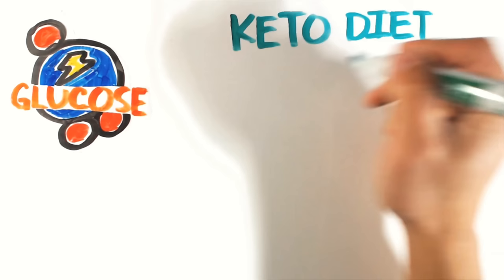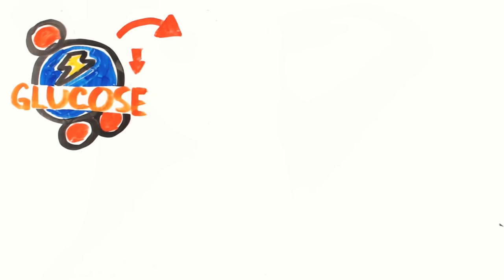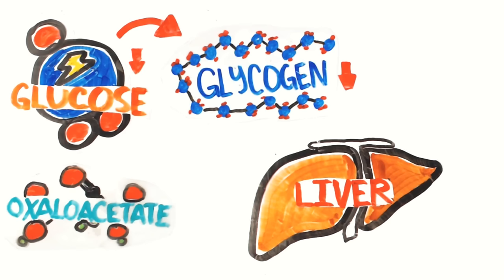In a Keto diet, the amount of carbohydrates you consume goes down, therefore the amount of glucose goes down too. In order to combat this, your body uses stored glucose in the form of glycogen, but that's going to run out as well. The next step is to convert a substance known as oxaloacetate in the liver into glucose.